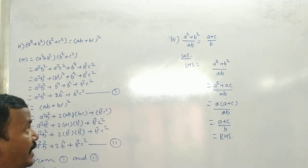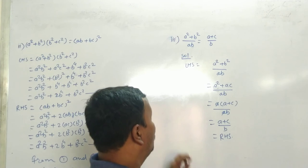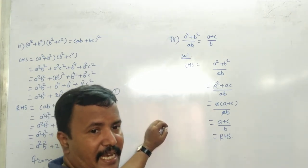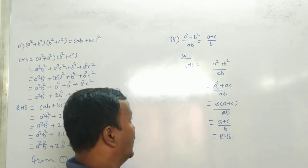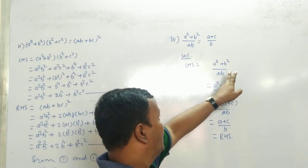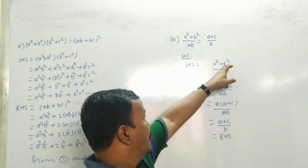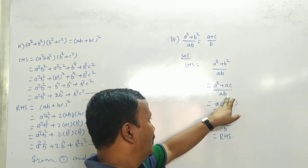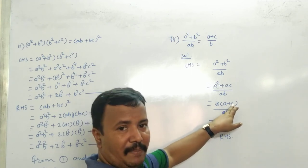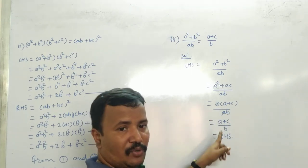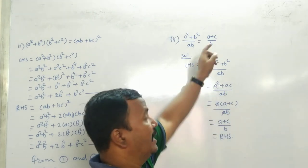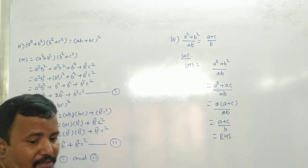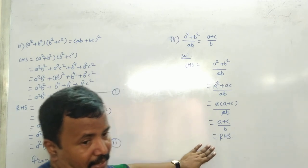इसको K method से भी solve कर सकते हैं। Third one: (A square + B square) upon AB is equal to (A + C) upon B। LHS में देखो — A square plus B square upon AB। B square is equal to AC, so B square की जगह AC लिखो: (A square + AC) upon AB। इसमें से A common लो: A(A + C) upon AB। A cut होगा — बचा (A + C) upon B। और वो हमारा RHS है — LHS is equal to RHS।